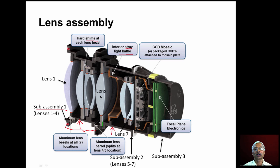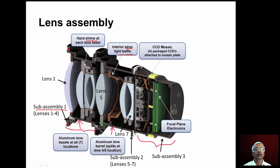Since stray light is reduced, the contrast of the image increases. Sub-assembly number three consists of the electronic circuitry — CCDs attached to a mosaic plate and focal plane electronic circuit boards. All three sub-assemblies are assembled using appropriate mechanical fasteners.